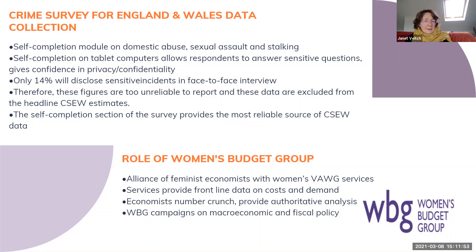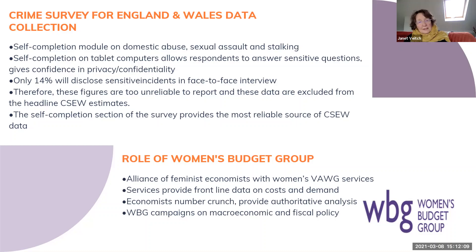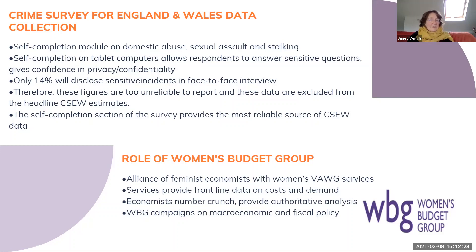This has provided us with the most reliable source of data so far. The Women's Budget Group, as an alliance of feminist economists, worked with women's violence services because those services provided frontline data on costs and demand. We were able to see that the number of women who went to the police — which was the only records we originally had — were far fewer than the actual number suffering from violence. In some minority communities, even fewer women go to the police. Our economists did the number crunching and provided the analysis.